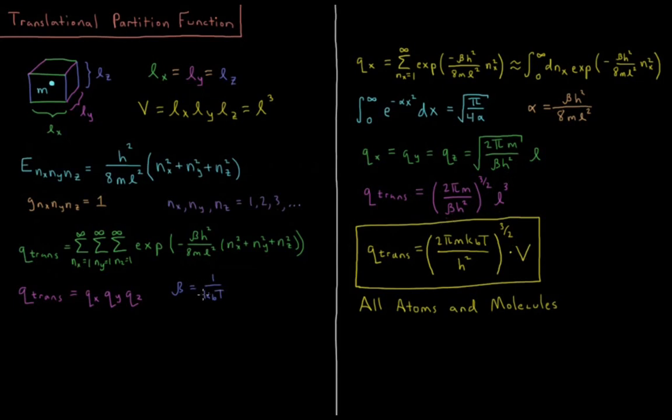Additionally, beta was equal to 1 over kt, so 1 over beta is kt. So our final translational partition function is 2 pi times the mass of the particle times the Boltzmann constant times the temperature divided by Planck's constant squared, all of that to the 3 halves power times the volume of the box. This is the translational partition function for all atoms and molecules.